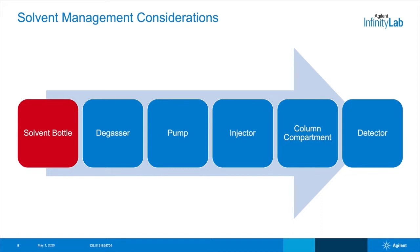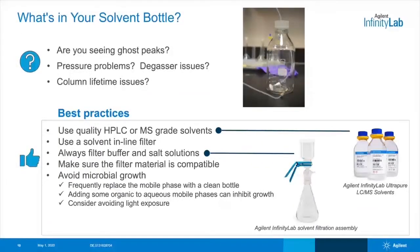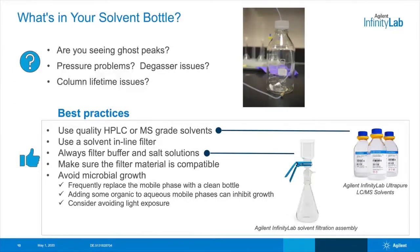Next, let's begin to move through the instrument flow path, starting with solvent management. All separations start with mobile phase, so what's in your solvent bottle is extremely important. If there's any contamination here, it will carry through and even accumulate in your system. That can set you up for a very long and frustrating troubleshooting session. Things you might observe in your LC analysis related to solvent contamination are ghost peaks, higher back pressure, degasser problems, even column lifetime issues, as debris or microbes collect on the inlet of your column.